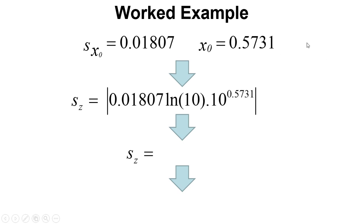We've got the values here. So the error is shown here. We've got the error in X multiplied by the natural log of 10 and then multiplied by 10 to the X. So that gives us 0.16 millimolar. So overall, our unknown concentration is 3.74 plus or minus 0.16 millimolar.